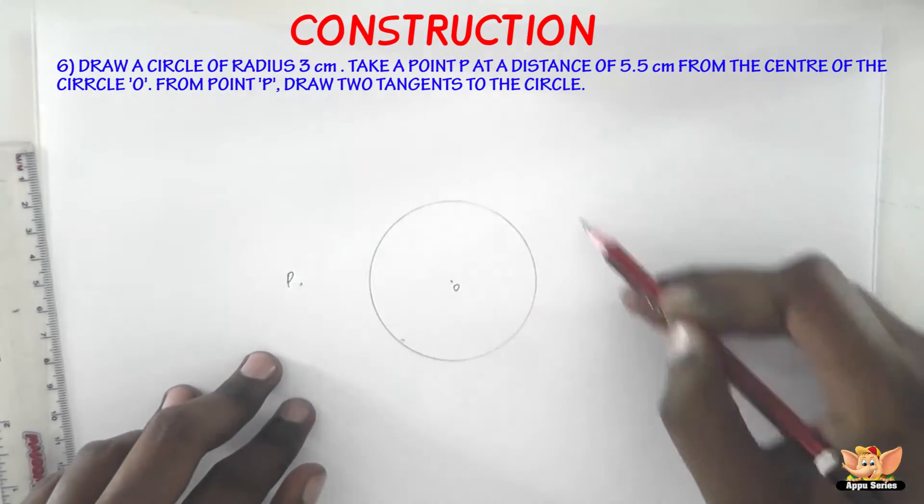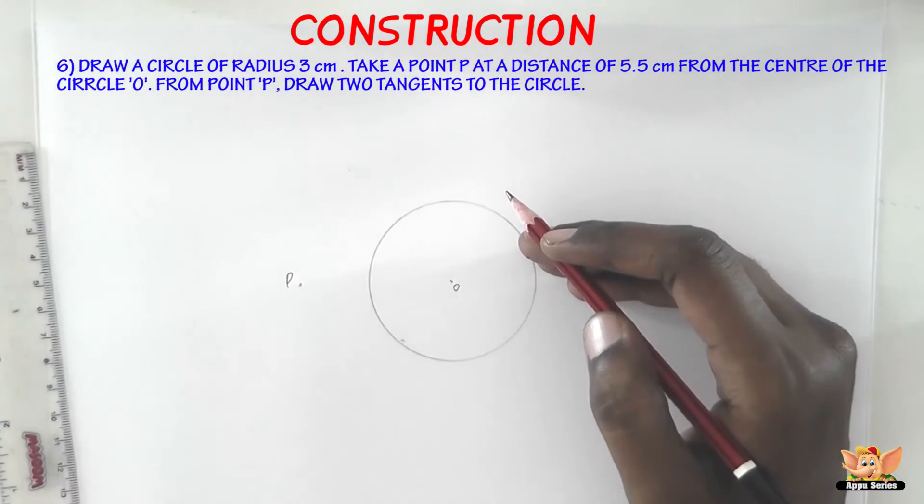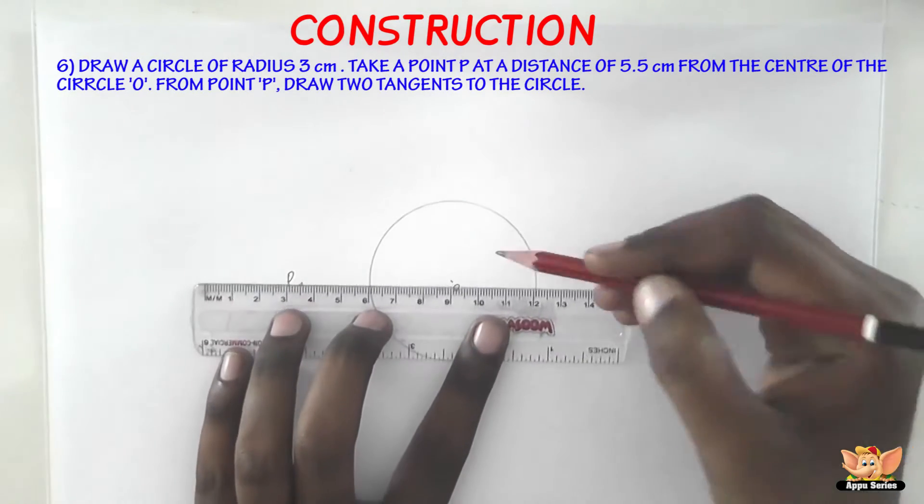It doesn't matter where this point is around the circle. It can be here, here, here because the distance 5.5 is going to be constant. So now what we have to do is join the points O and P.